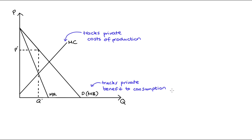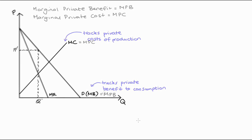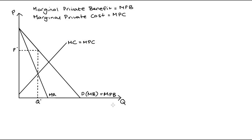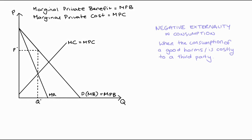In contrast, externalities are costs or benefits that are afforded to or borne by a third party — neither the producer nor the consumer. To make clear that these curves only track private costs and benefits, I'll label marginal benefit as marginal private benefit (MPB) and marginal cost as marginal private cost (MPC).